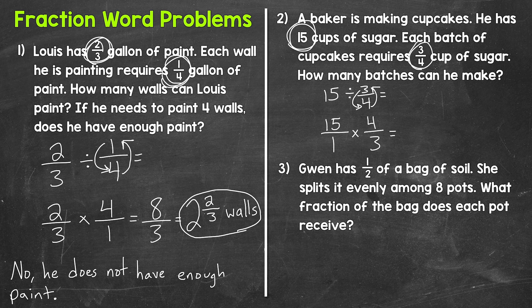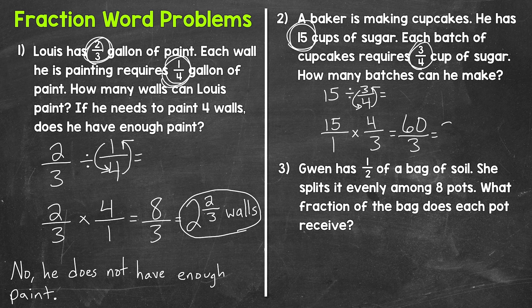Now we can multiply. 15 times four gives us 60, and one times three gives us three. We end up with 60-thirds, which is an improper fraction. Converting: 60 divided by three gives us 20 with no remainder, so this is just a whole number. Our answer is 20. How many batches can he make? 20 batches.